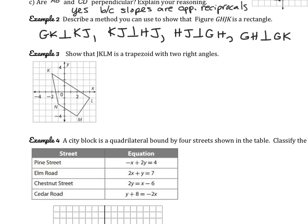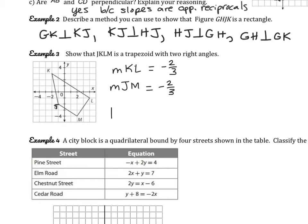Looking at example 3: show that JKLM is a trapezoid with two right angles. To prove it's a trapezoid, we need to show two of the lines are parallel. Comparing the slopes of KL and JM — for KL, going down 2 over 3; and for JM, also down 2 over 3. Since the slopes are the same, KL is parallel to JM, meaning it is a trapezoid.